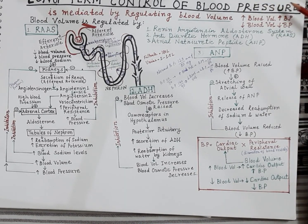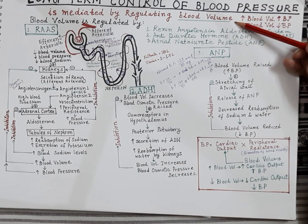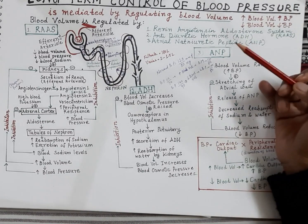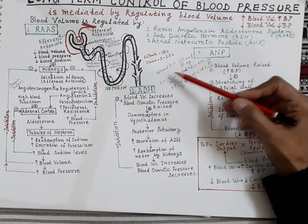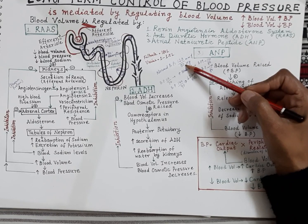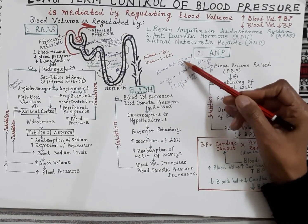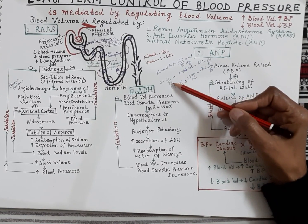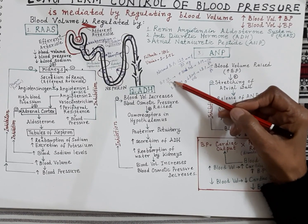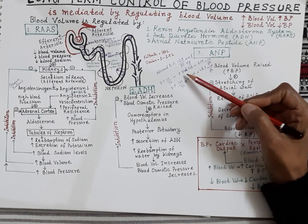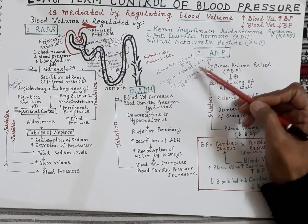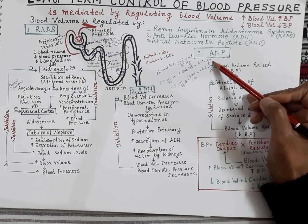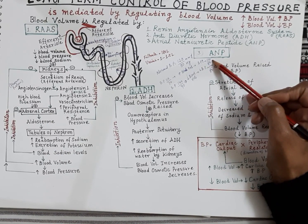So how does the body achieve long-term control of blood pressure? Body does it by regulating the blood volume and cardiac output. In a normal healthy adult, the normal blood pressure is 120 by 80 mm of mercury. Suppose blood pressure goes down to 110 by 70 — the body needs to raise it. Body ne blood volume bhadha di, blood volume bhadhi, cardiac output bhadhi, blood pressure bhadha — from 110 by 70 it increases back to 120 by 80.